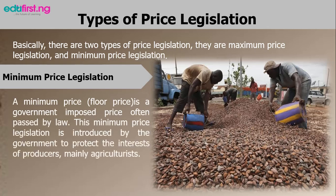There are basically two types of price legislation: maximum price legislation and minimum price legislation. The minimum price legislation, otherwise known as the price floor, is a government-imposed price often passed by law. It is introduced by the government to protect the interest of producers, mainly agriculturists. For example, when there is surplus or bumper production, prices of commodities may fall or tumble, bringing hardship to producers. To prevent such situations, the government may adopt a minimum price to protect the interest of the producers.